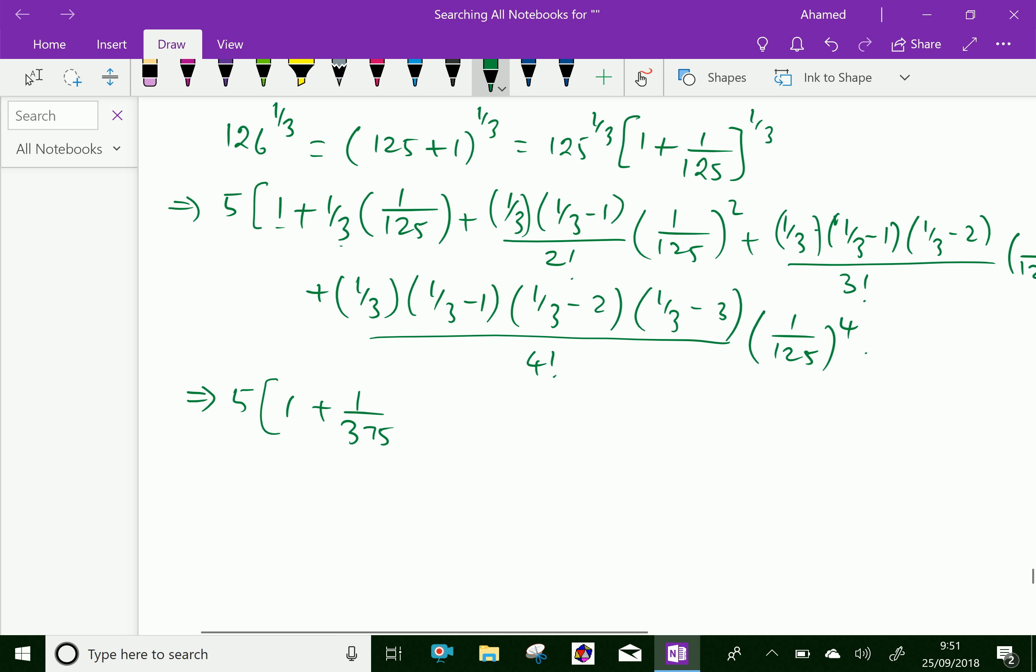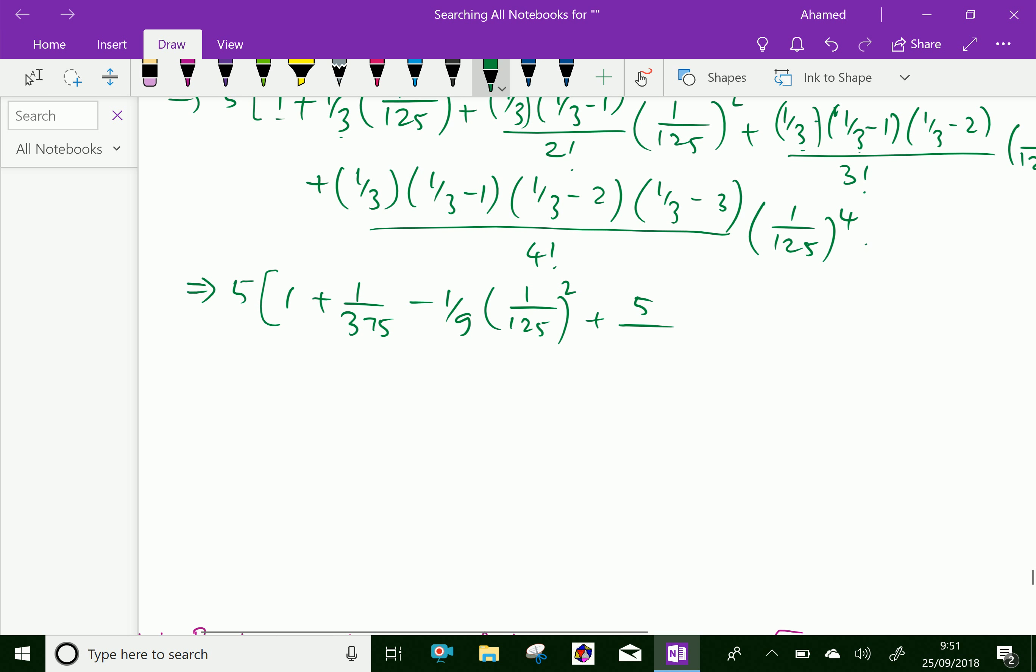After simplification it becomes minus 1/9 times 1/125 squared plus next (1/3)(1/3 - 1)(1/3 - 2) over 3 factorial gives 5 over 81 times 1/125 cubed.